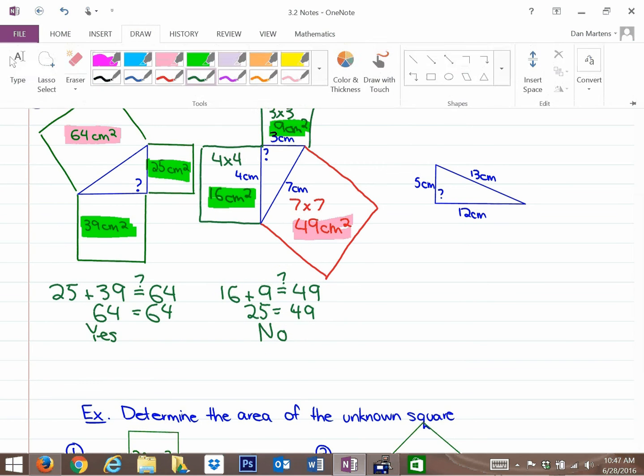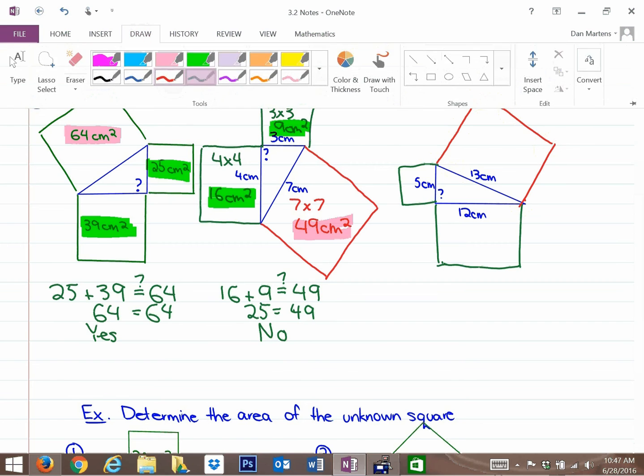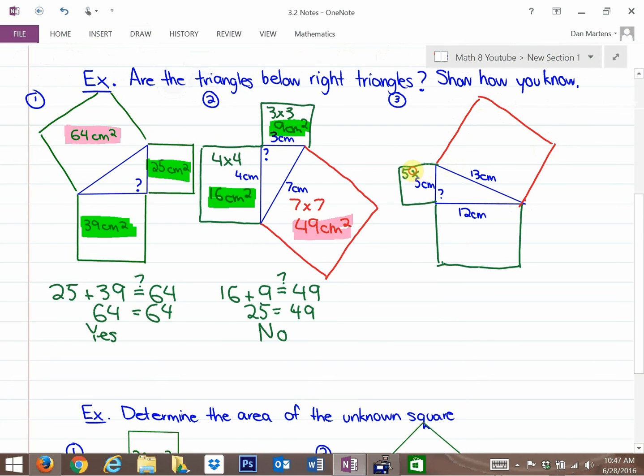In this last example, we're going to do a similar thing here. You might notice that these are side lengths. So our side lengths of 5, 12, and 13, does that make a right triangle? So we're just going to investigate that with the areas that are on each side. And forgive my squares that aren't quite squares. But the area here is 5 times 5, which is 25 centimeters squared. The area of this square is 12 times 12, which is 144 centimeters squared. And the area here is 13 times 13, which is 169 centimeters squared.